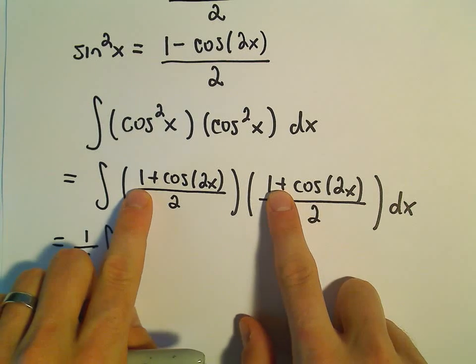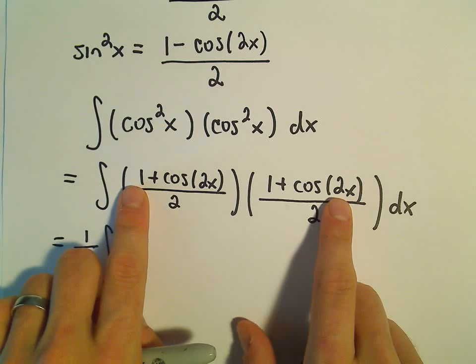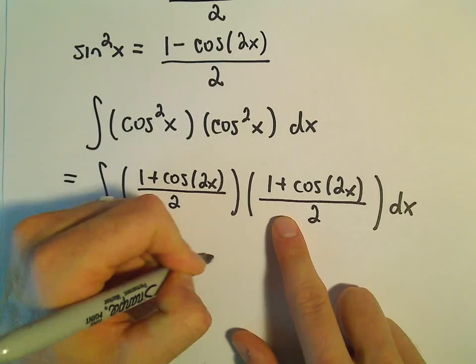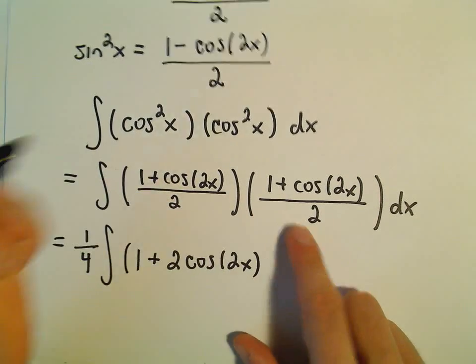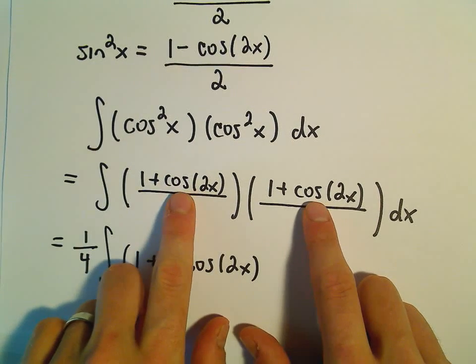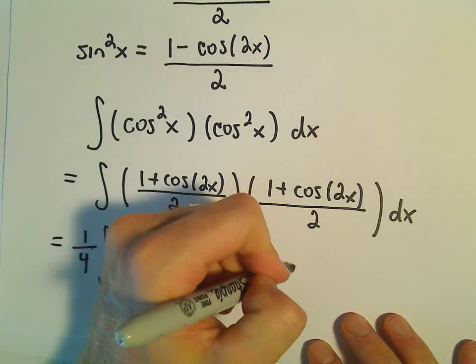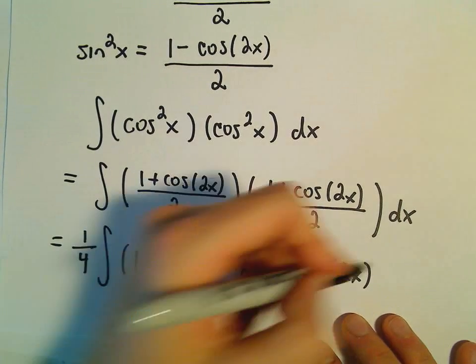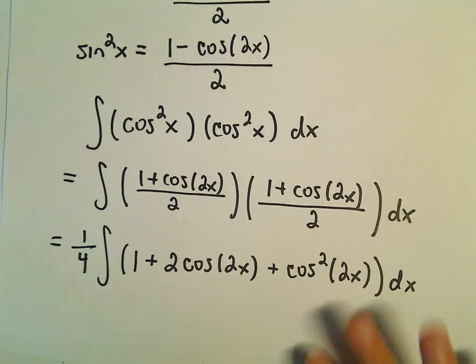So we would get 1 times 1. We would get a positive cosine 2x and then another positive cosine 2x. So that's 2 cosine of 2x. And then on the outside we'll get a cosine squared. We'll be left with a cosine squared of 2x.